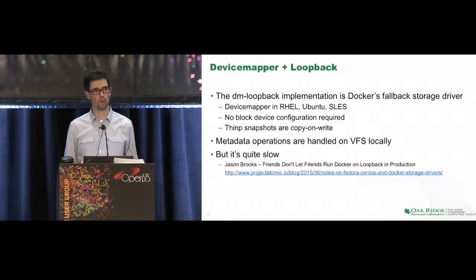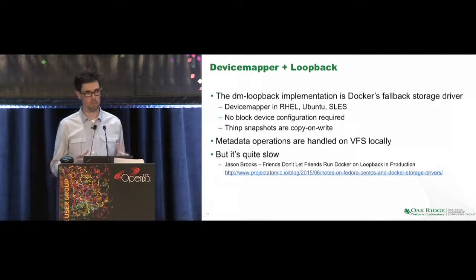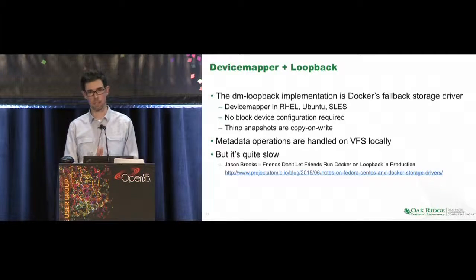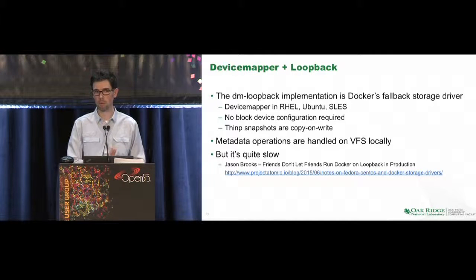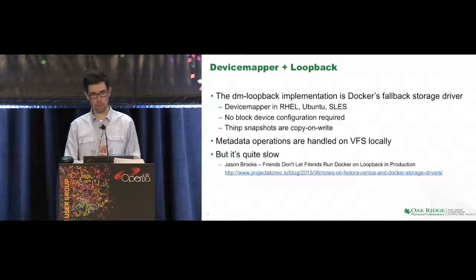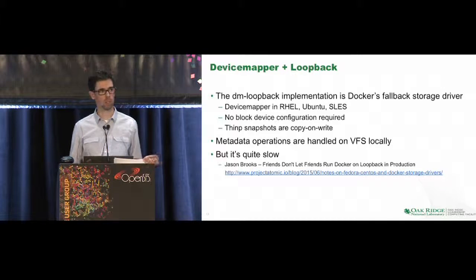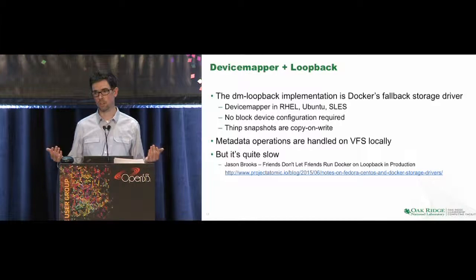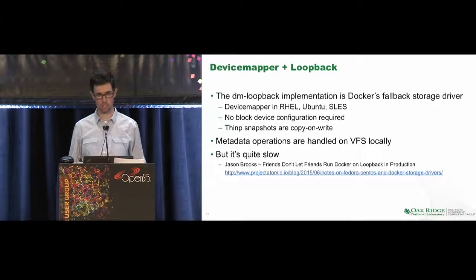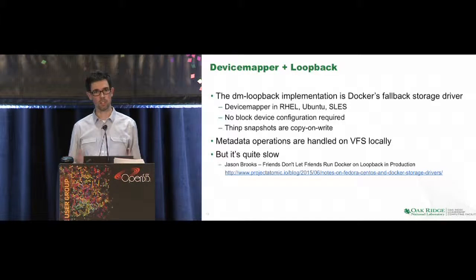However, device mapper is quite slow — this has been cited many places in the Docker context compared to other available options. You're reading off the block device, so you're layering abstractions. You're also not able to share page cache entries with device mapper, so every container that starts up will create a new page cache entry for each directory entry. If you have a one gigabyte container, you might end up using four or five gigabytes of memory if you start four or five different containers.